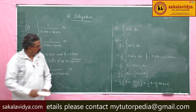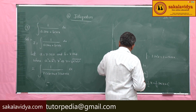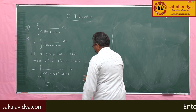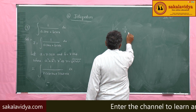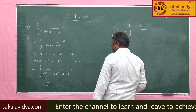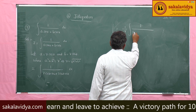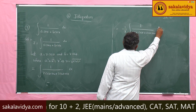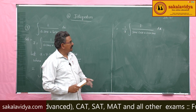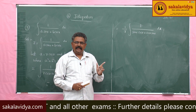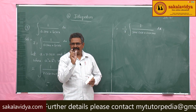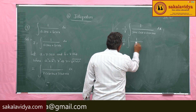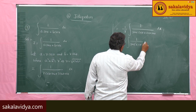Taking R common, we get 1/R times the integral of 1 by (sin x cos θ + cos x sin θ) dx. Now, sin x cos θ + cos x sin θ is in the form sin A cos B + cos A sin B, which equals sin(A + B). So we get 1/R times the integral of 1/sin(x + θ) dx.